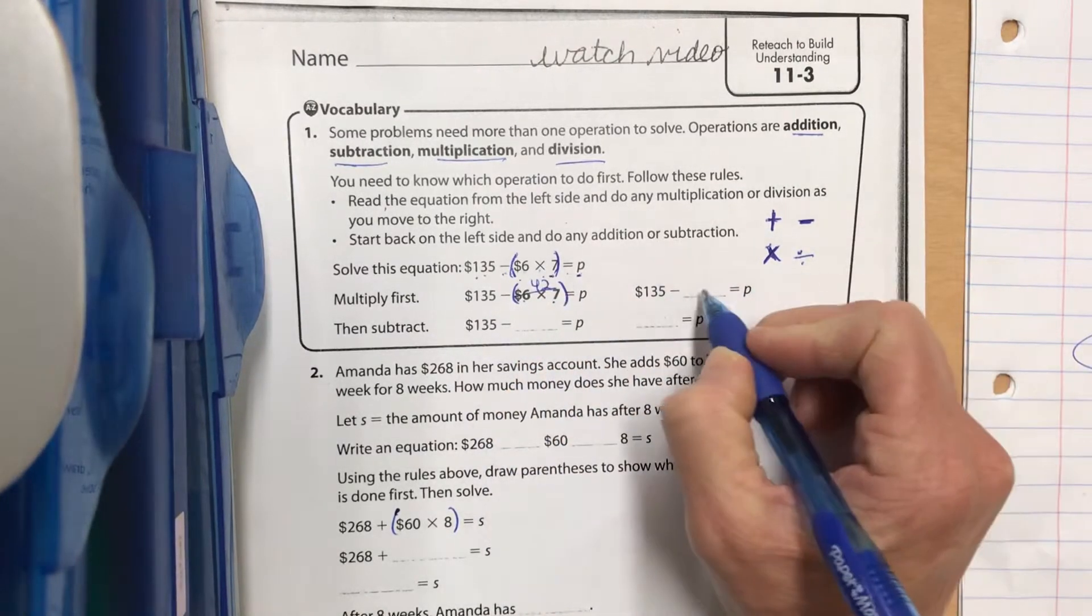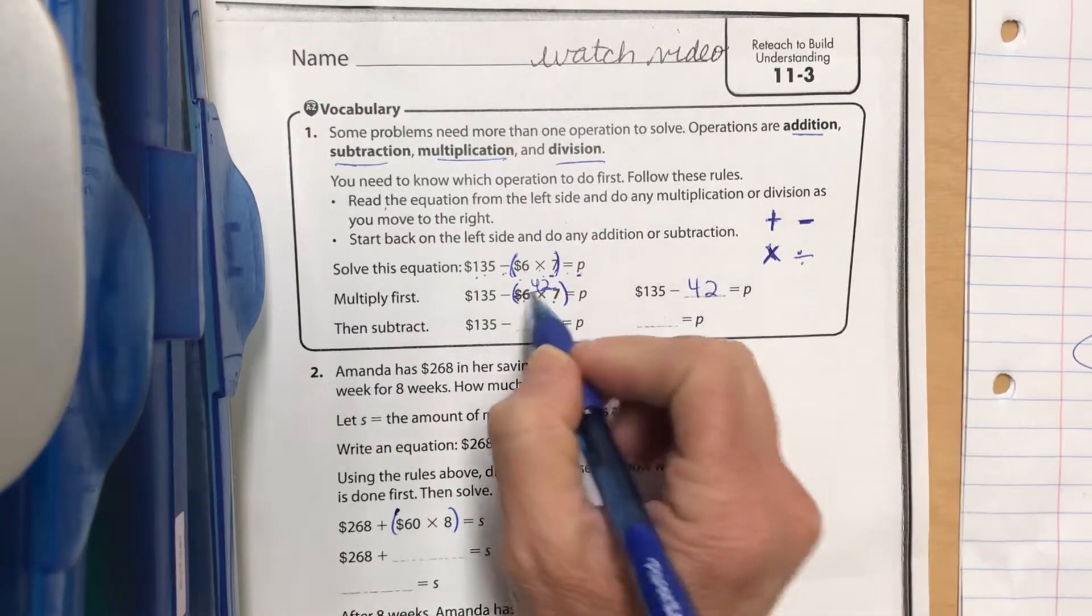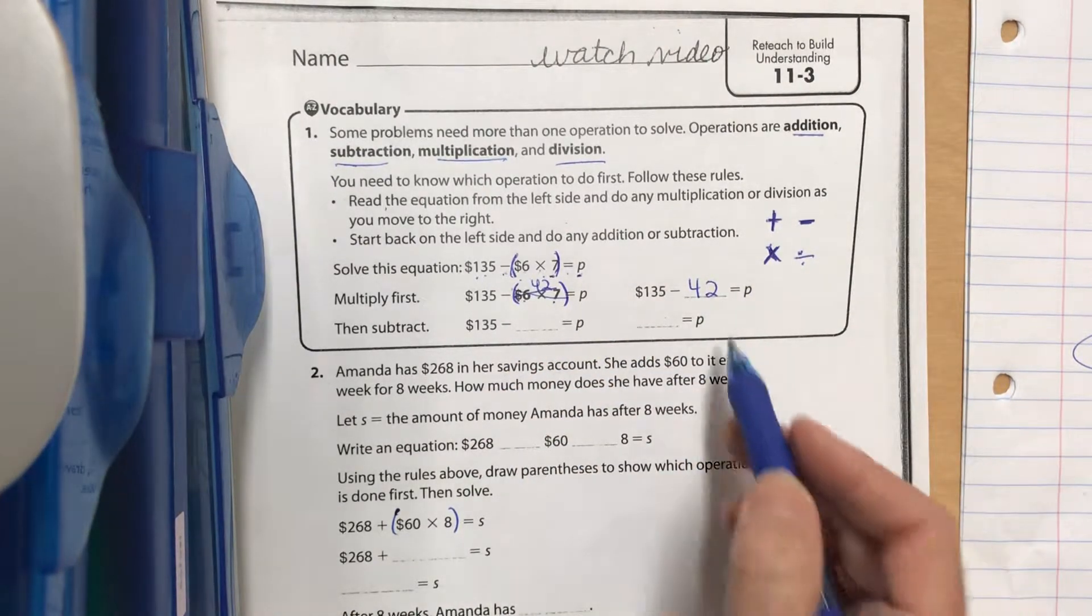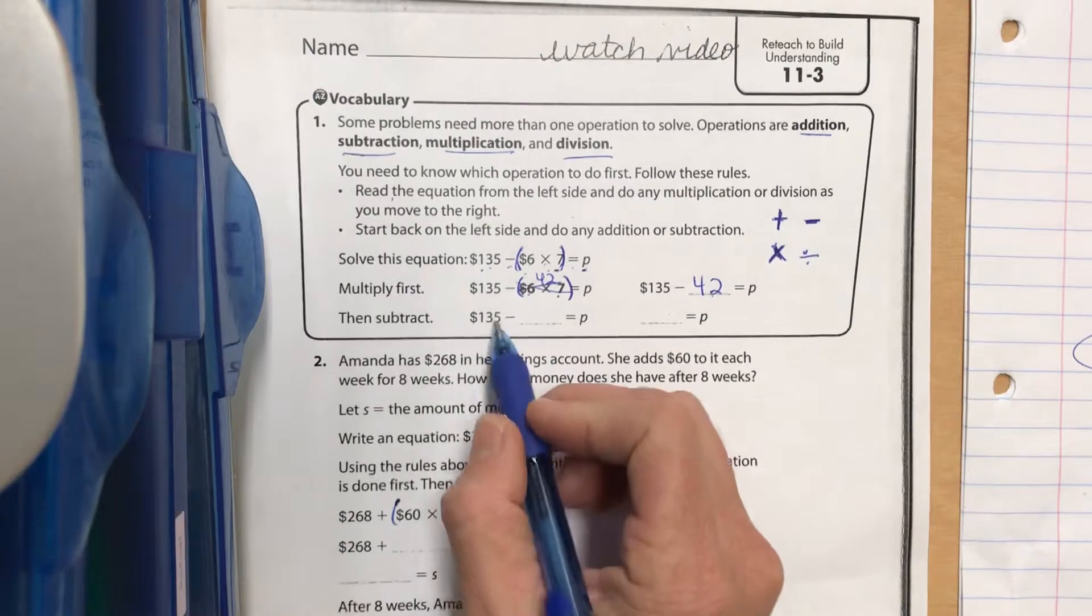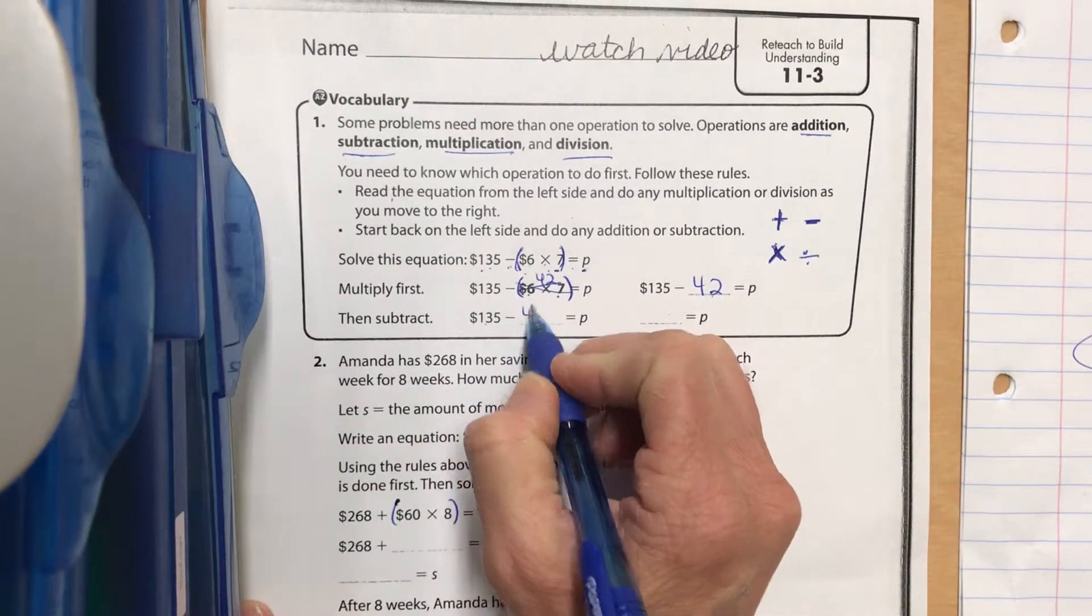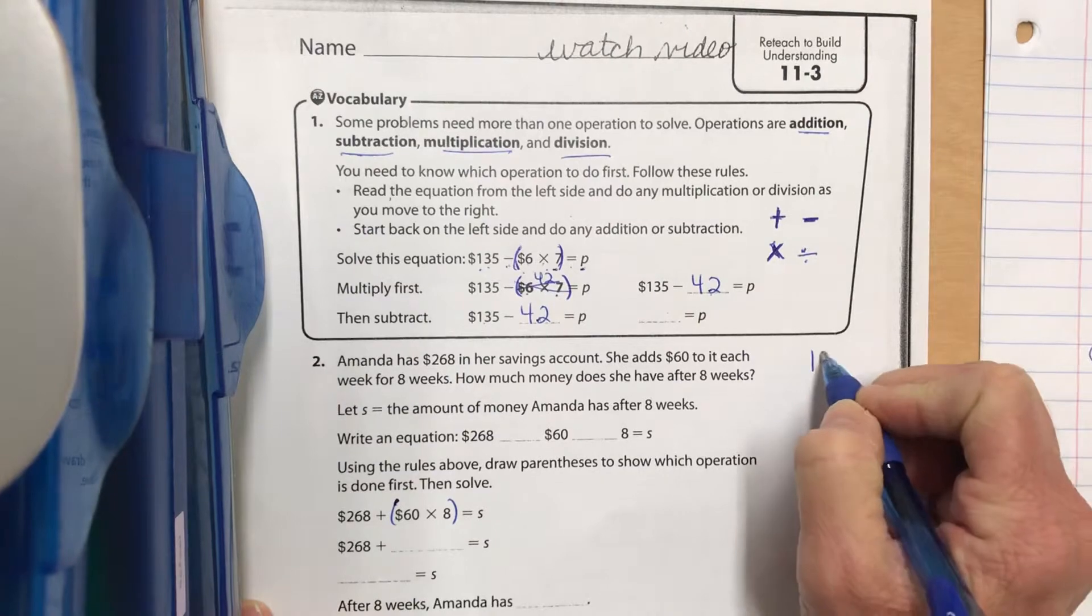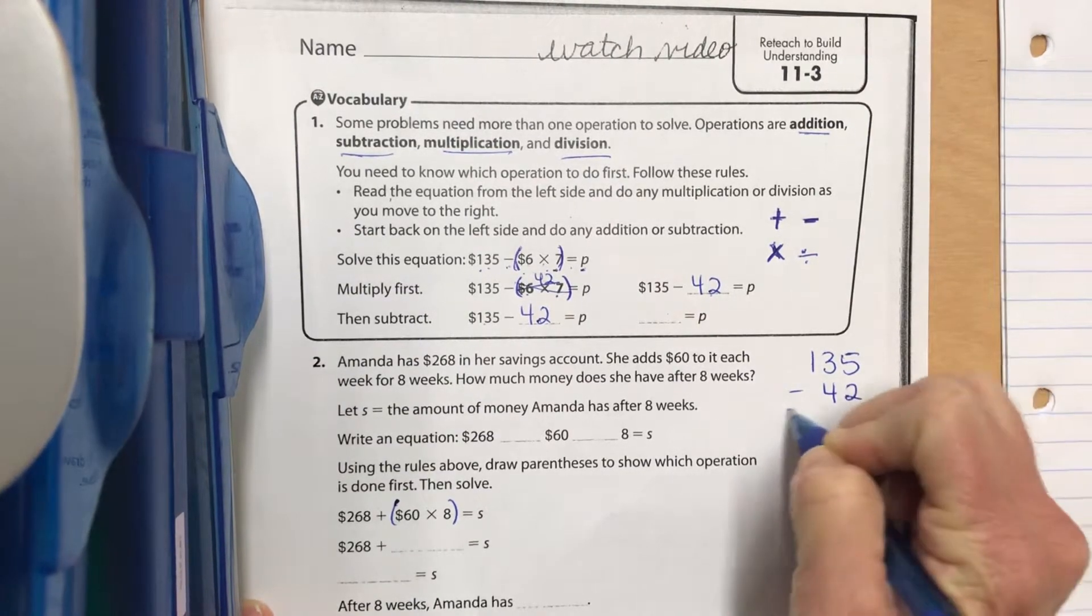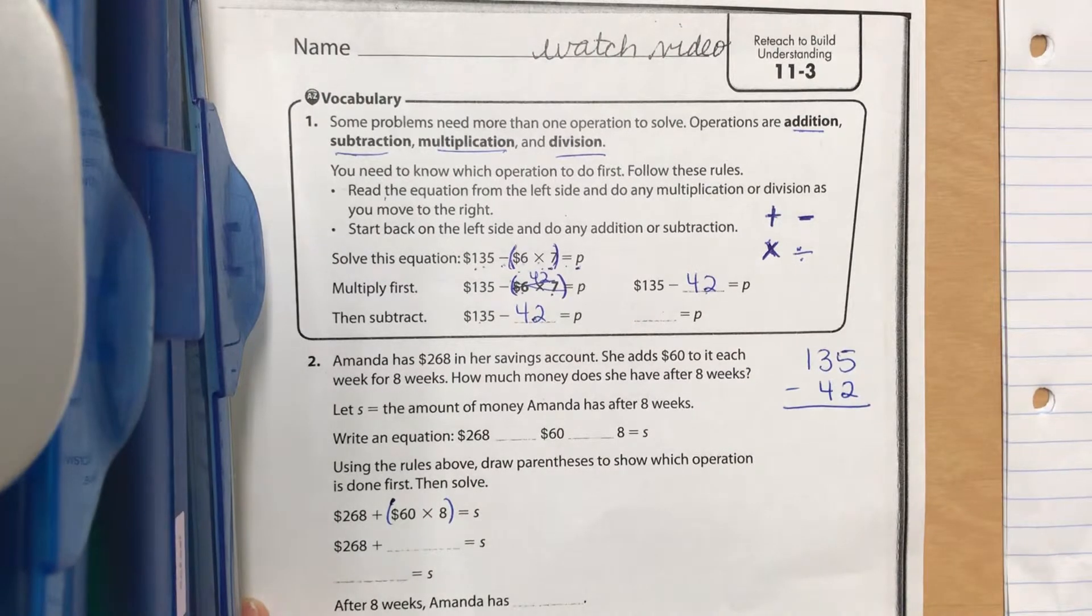So we have 135 minus 42. We've gotten rid of this six times seven and replaced it with 42. Now we need to do 135 minus 42. I want you to work that out. Give yourself some space, pause it and come back.